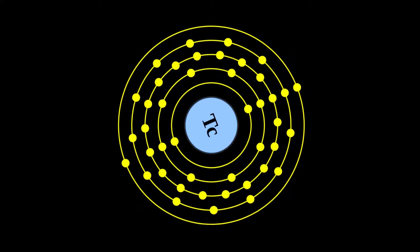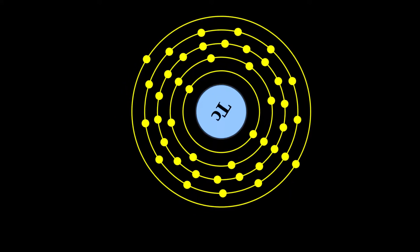Technetium is a chemical element with symbol Tc and atomic number 43.